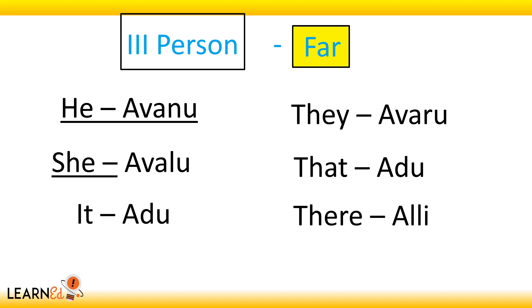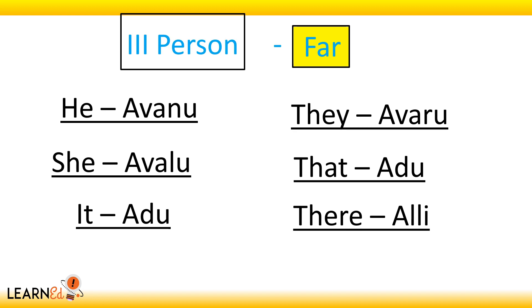Now if the persons are far away from us, the words start with the letter 'a'. He: avanu. She: avalu. It: adu. They: avaru. That: adu. There: alli.